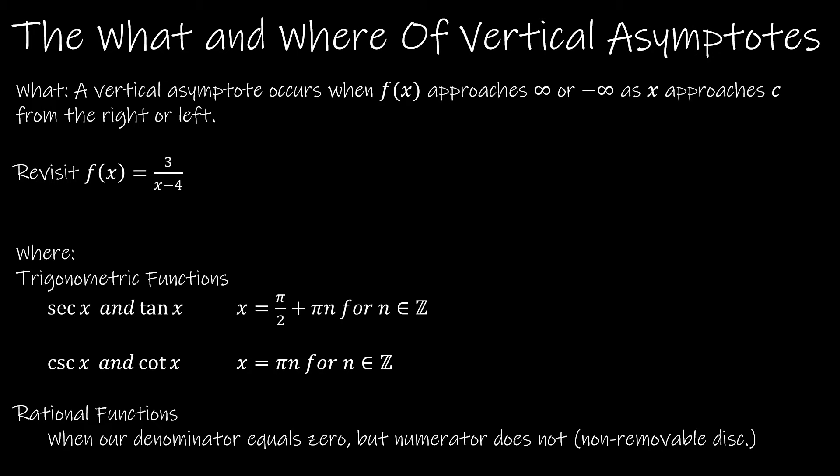We've already looked at this particular example, f(x) is equal to 3 divided by x minus 4. And we looked at from the left and from the right what was happening. We said at x equals 4, the function is undefined, but the limit as x approaches 4 from the left of f(x) was negative infinity, and the limit as x approaches 4 from the right of f(x) was positive infinity.